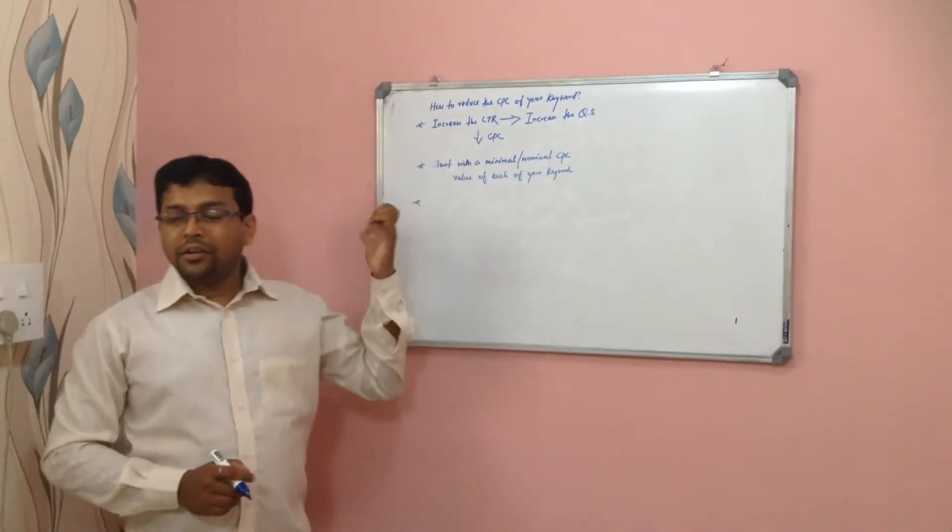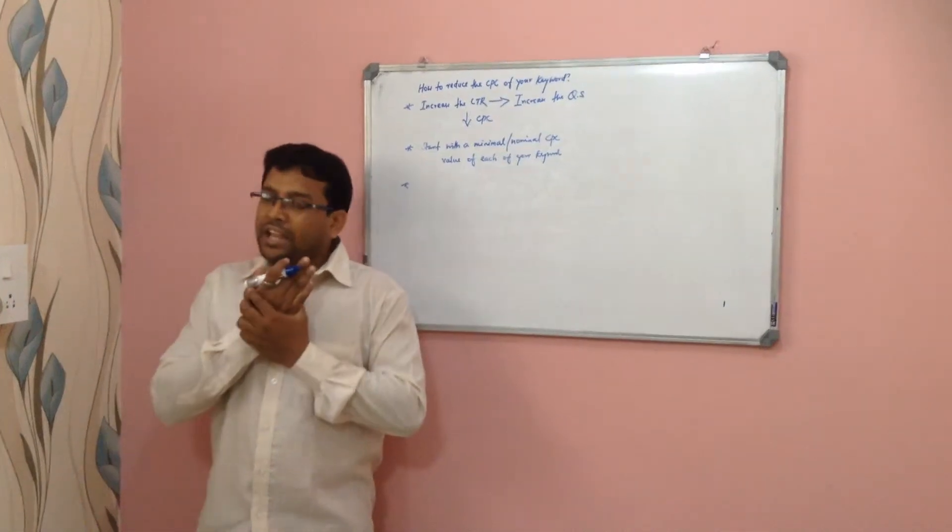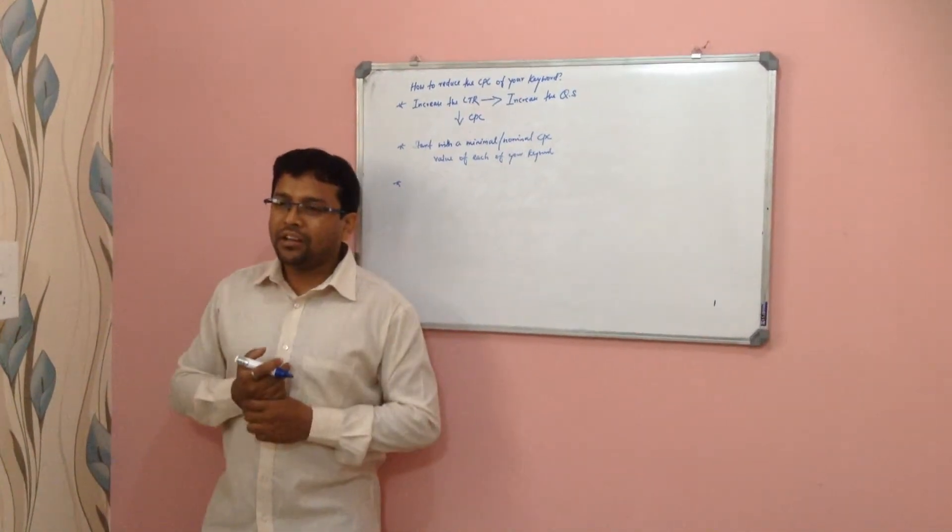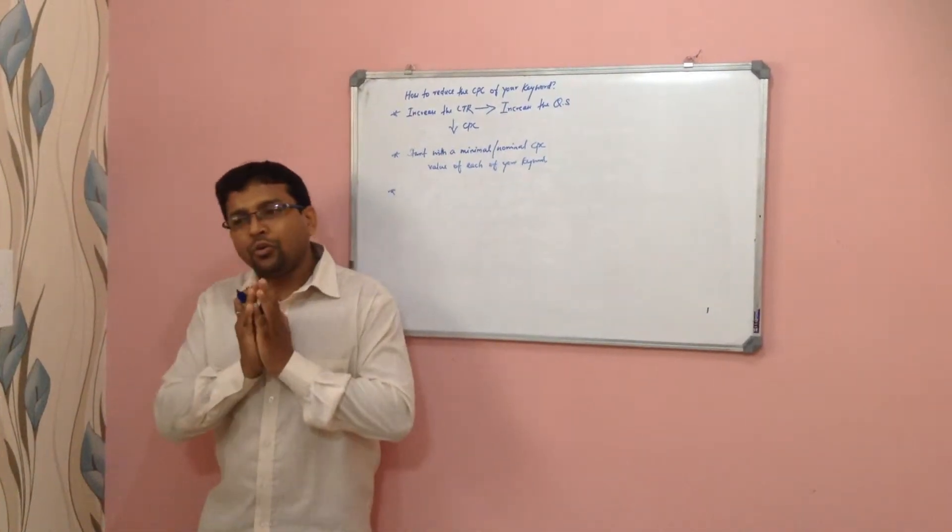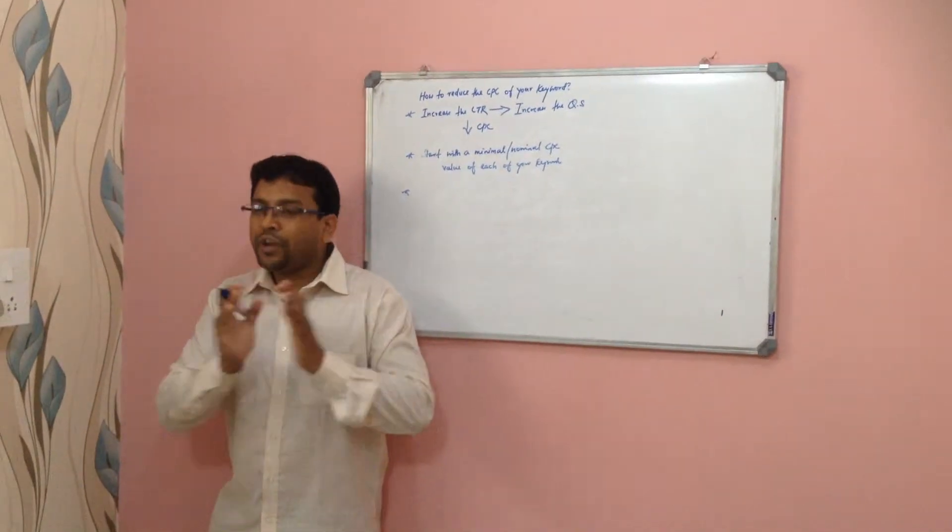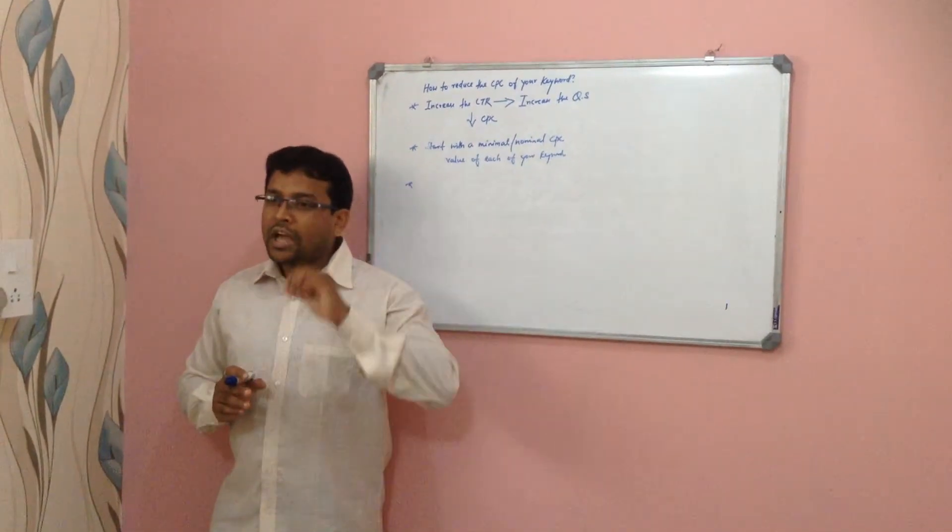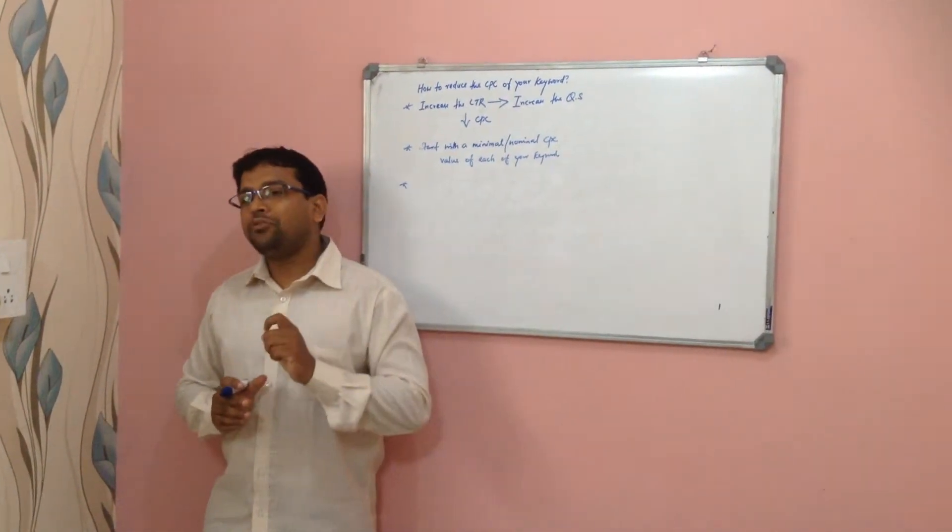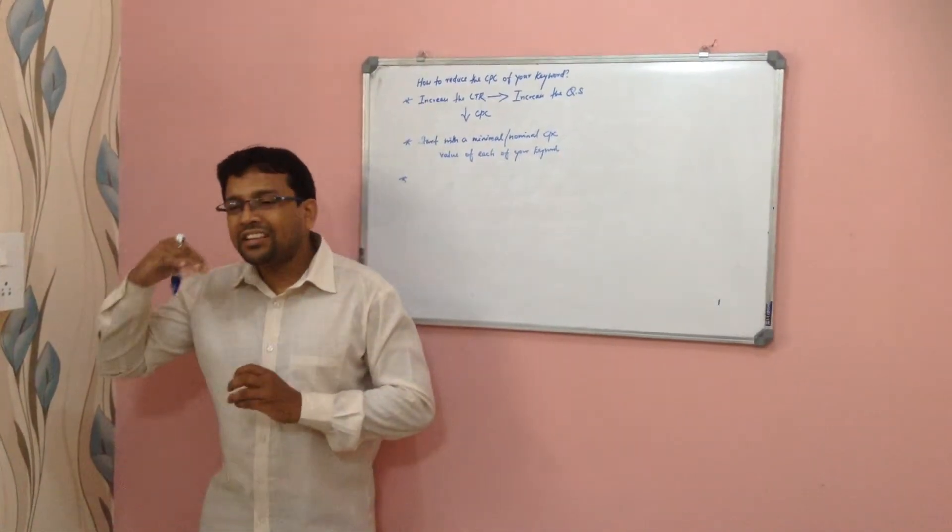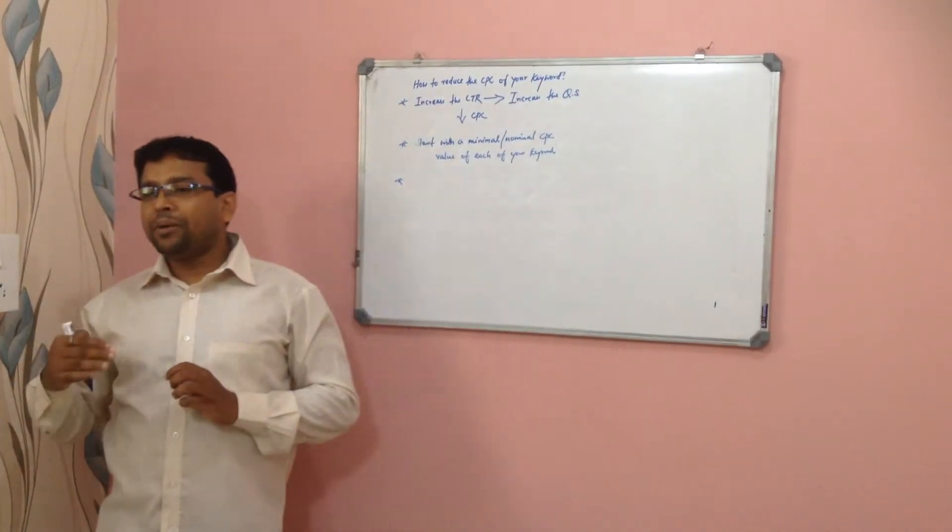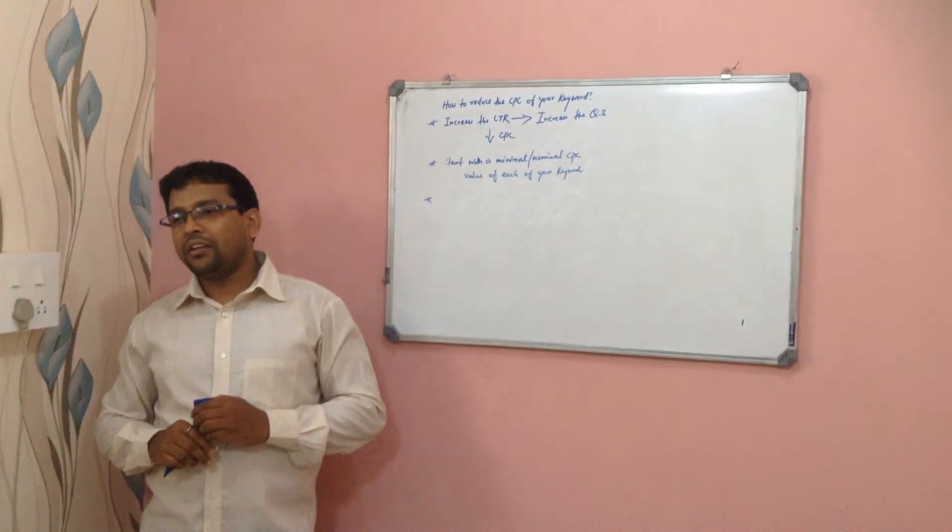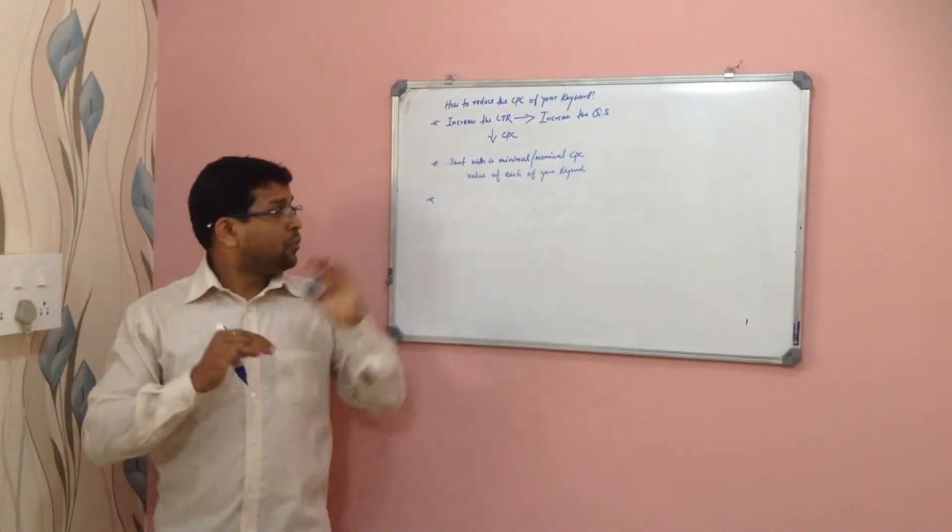Here we are talking about individual keyword CPC. Overall campaigns have a CPC. Whenever you go live with a campaign, you will have keywords having different CPC values. And for sure, you have to give a benchmark level to your average CPC value. Any keyword that is exceeding above your benchmark CPC level, you surely have to reduce the CPC for that.